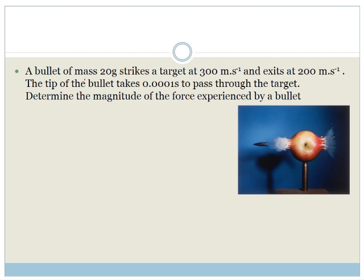So let's do this final example. It says a bullet of mass 20 grams strikes a target at 300 meters per second. So we've got a bullet going through an apple and it's striking it at 300 meters per second and exiting at 200 meters per second. So it's slowed down by 100 meters per second. And it says the tip of the bullet takes 0.001 seconds to pass through the target. Determine the magnitude of the force experienced by the bullet.